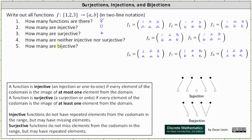For question four, how many functions are neither injective nor surjective? There are a total of eight functions, zero of which are injective and six of which are surjective. Eight minus six is two, giving us two functions that are neither injective nor surjective — those are f sub one and f sub two. F sub one and f sub two are not injective because injective functions do not have repeated elements from the codomain in the range, which functions one and two do. They are also not surjective because surjective functions do not miss elements from the codomain in the range, which functions one and two also do.